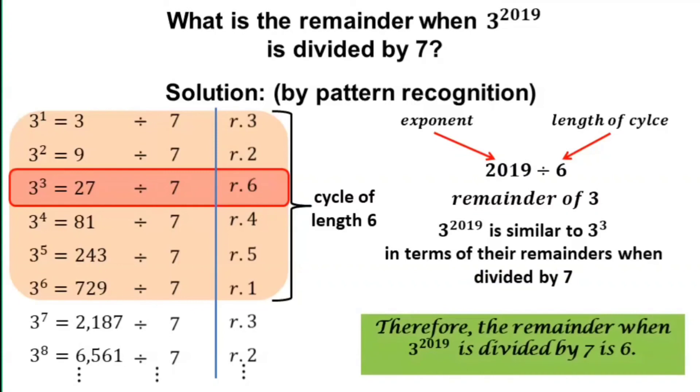Therefore, the remainder of 3 to the power of 2019 divided by 7 is 6.